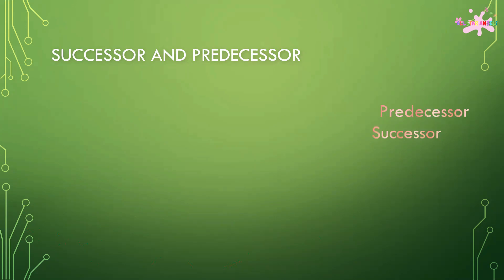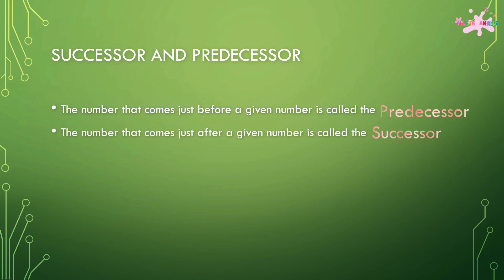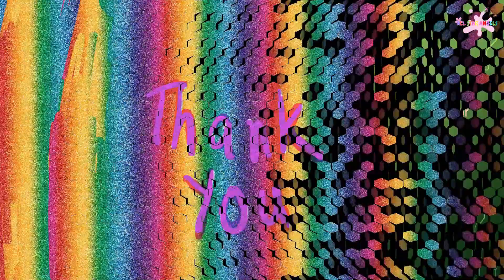Successor and predecessor. The number that comes just before a given number is called the predecessor of that number. The number that comes just after a given number is called the successor of that number. For example, the predecessor of 1 is 0, and the successor of 1 is 2. Thank you all, I'll see you next time. Bye!